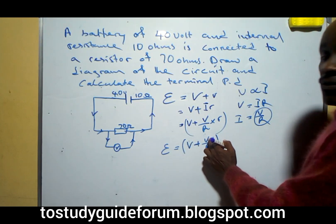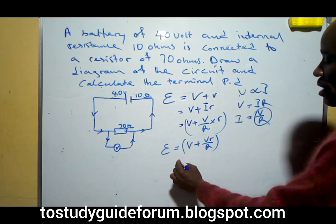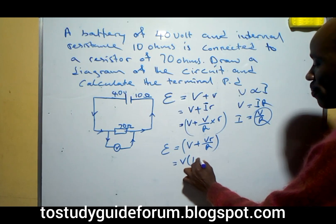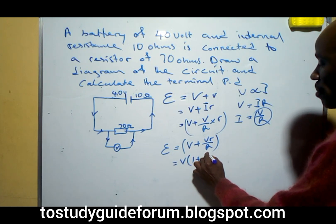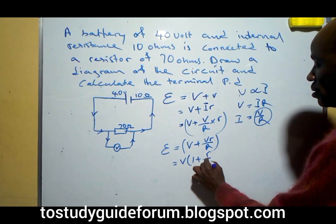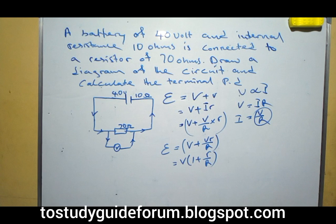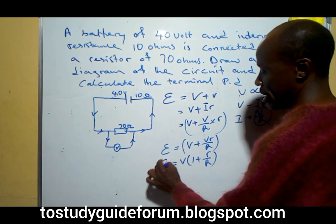Now, since we have V here and V, then we can choose to put the V outside the bracket. We have one plus small R over big R. So that's what we have. So based on that now, which is equal to also the EMF.